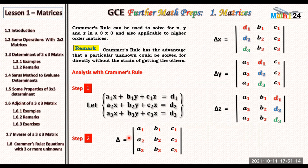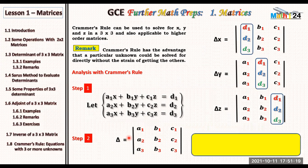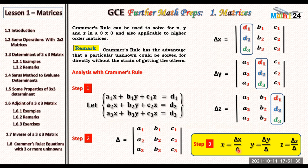To obtain the value of x directly, or y directly, or z directly: in step three, x is equal to delta x over delta. Similarly, y will be equal to delta y over delta, and z will be equal to delta z over delta. So we can solve x directly, solve y directly, or solve z directly — this is the advantage that Cramer's Rule has.